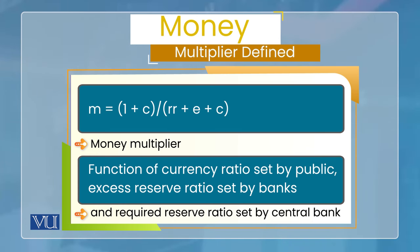تو money multiplier کس چیز سے set ہوتا ہے؟ یہ currency ratio (c) کا function ہے — اور c کون set کرتا ہے؟ public۔ یہ excess reserve ratio (e) کا function ہے — یہ کس کا decision ہے؟ commercial bank کا۔ اور money multiplier required reserve ratio (rr) پہ dependent ہے — یہ کون set کرتا ہے؟ central bank۔ اس کا مطلب ہے money multiplier — اور اس طرح money supply process — تینوں players کے decisions سے determine ہوتا ہے: central bank، commercial bank، اور general public۔